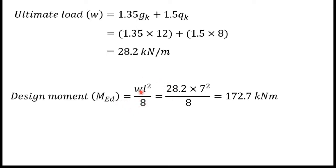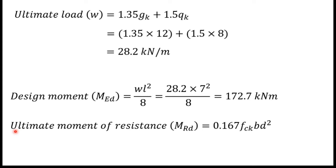Next we find the design moment MED using the equation MED = W·L²/8. Substituting W = 28.2 kN/m and the span L = 7 meters, and simplifying, we get MED = 172.7 kilonewton meters.